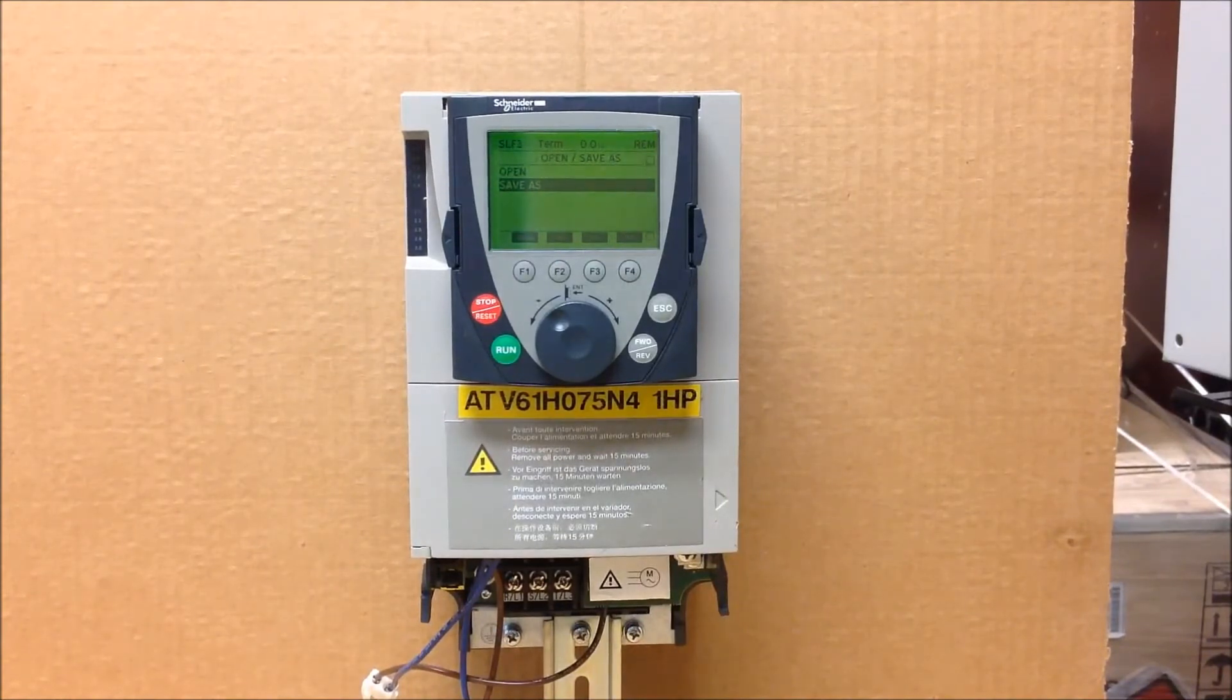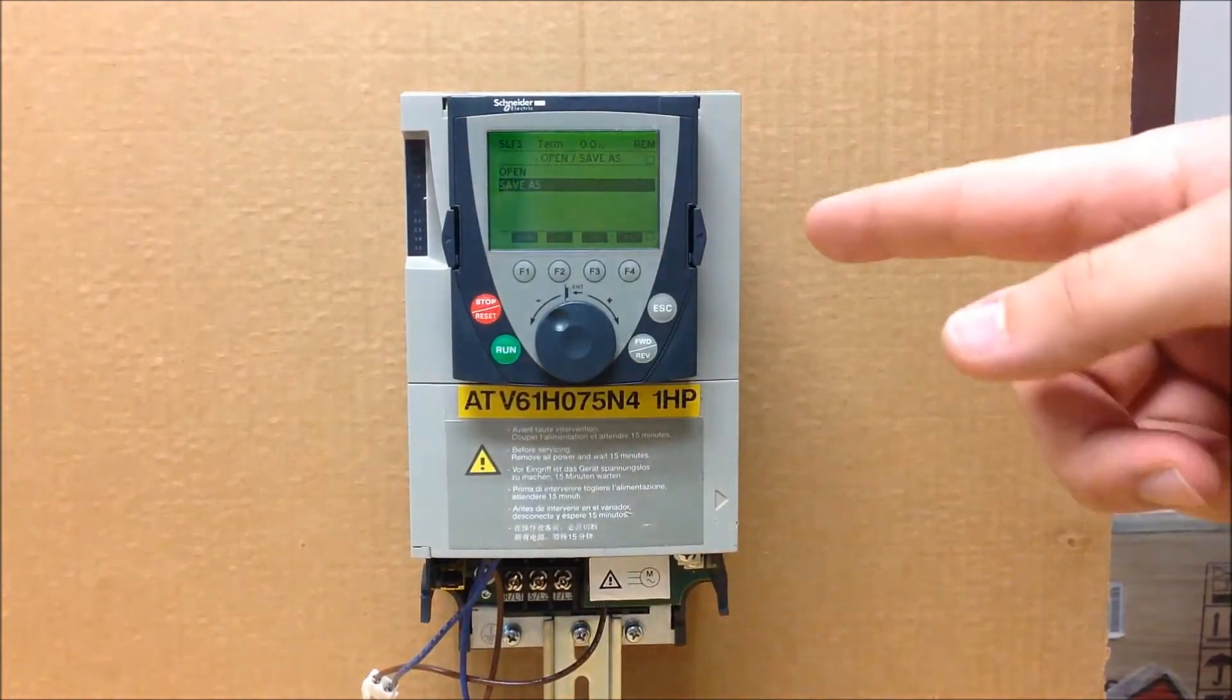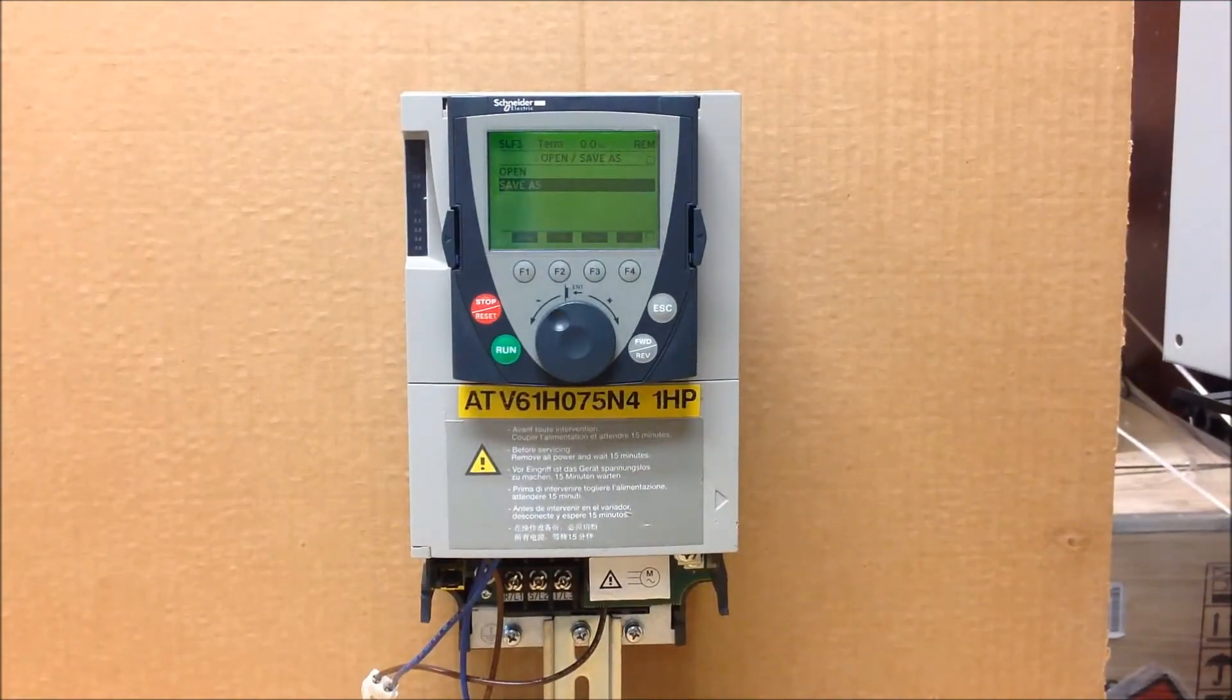Now the next step, let's go and assume that you want to go ahead and the keypad now has the file that you want. What you do is you take that keypad out and you put it on another drive, and you have to go back to the exact same menu as we were now. So you have to go to main menu and then go to open save as.